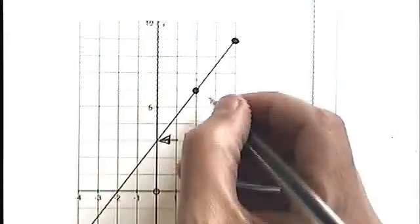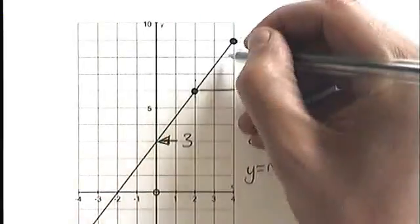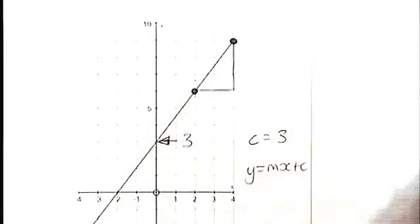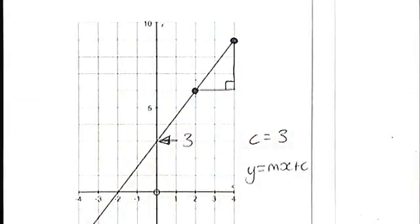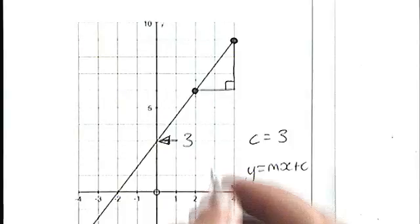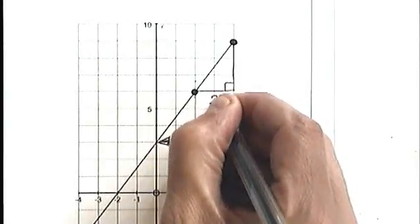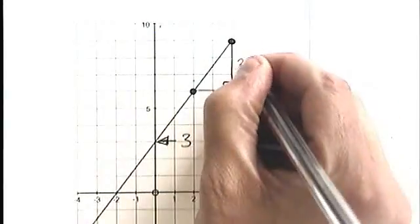Once again, we draw the little triangle on. There it is. It's a right-angled triangle. So in this case, I've gone two squares along and three squares up.